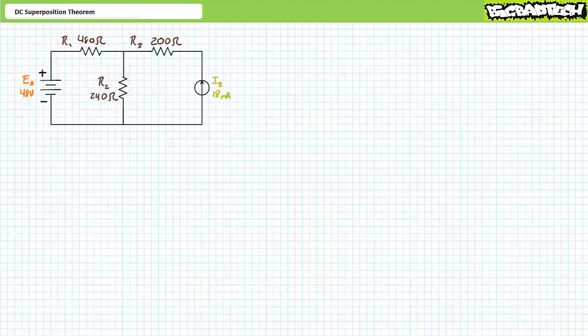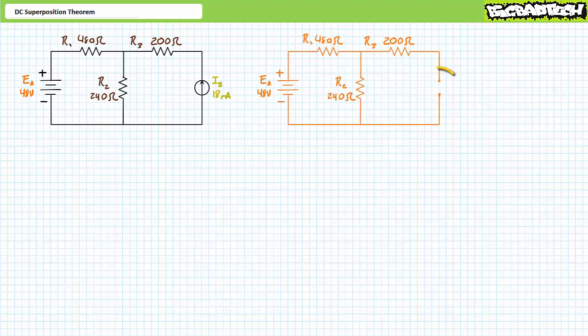Consider this series-parallel circuit with multiple sources. We'll apply the superposition theorem to solve for the voltage drop across and the current through each resistive element. This is one of my favorite circuits to begin the discussion of superposition theorem since it dramatically illustrates the effects of opens and shorts in the as-analyzed circuits. Starting from the perspective of the voltage source, we remove the current source by replacing it with an open. When we redraw the as-analyzed circuit including the open, the nature of the circuit is fundamentally changed — current travels through R1 and R2 in a purely series fashion, and no current travels through R3.